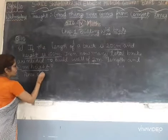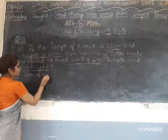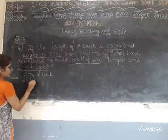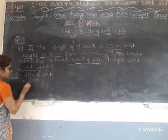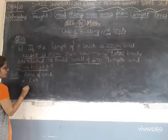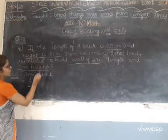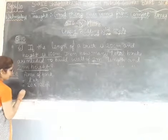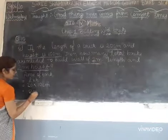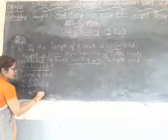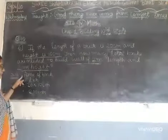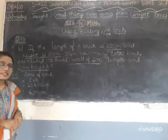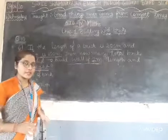Area of brick — that is length into height: 20 into 10 cm, that is 200 cm². So 1 brick will occupy how much space? 1 brick occupies 200 cm².